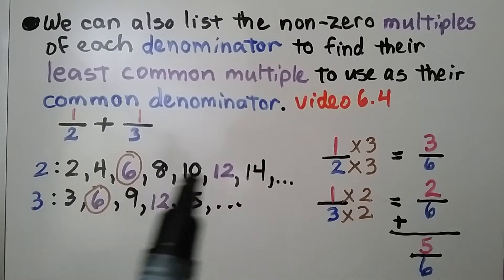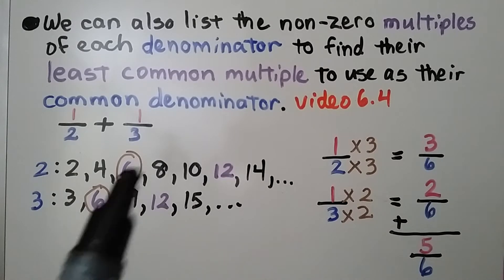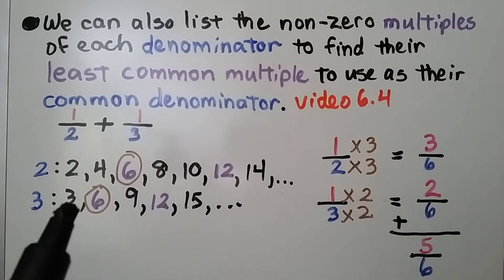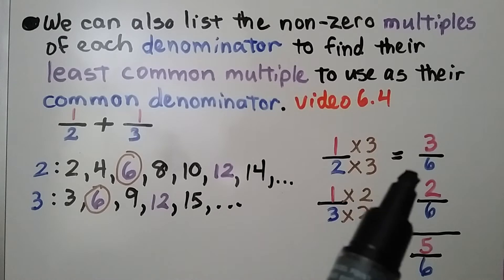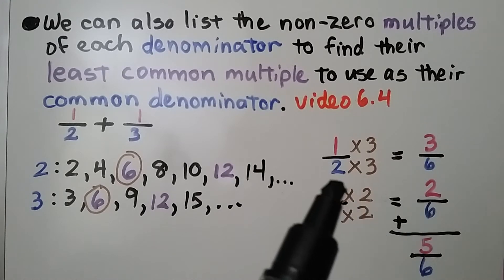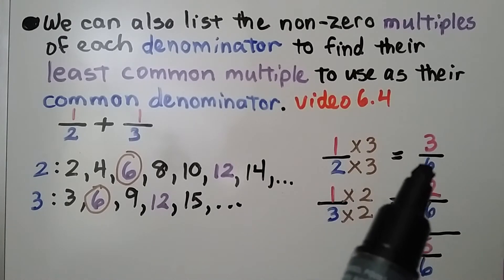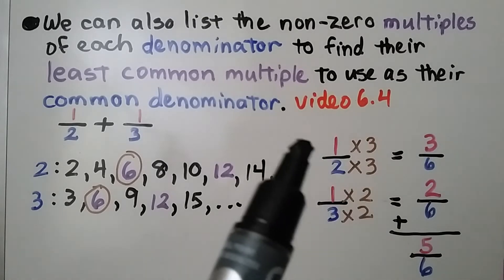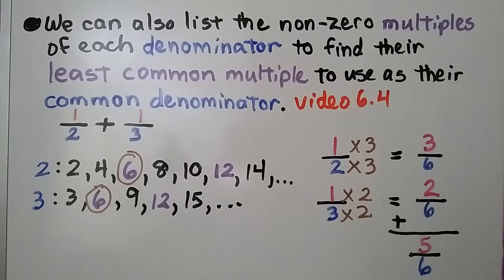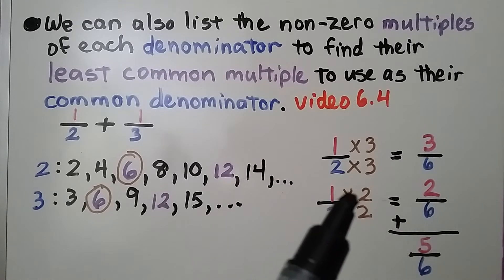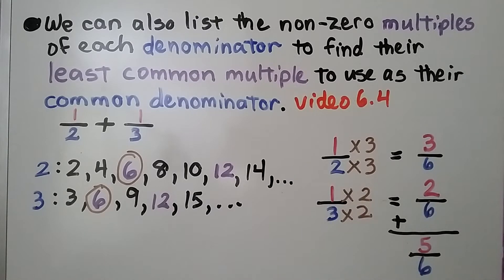We list the multiples for 2 and the multiples for 3 to find their least common multiple. They have 12 in common, but that's not the least — 6 is the least. We use 6 as the common denominator. 2 times 3 equals 6, so we multiply the numerator by 3 and get 3 sixths. 3 times 2 equals 6, so we multiply that numerator by 2 and get 2 sixths. Now we add 3 sixths plus 2 sixths and get 5 sixths.